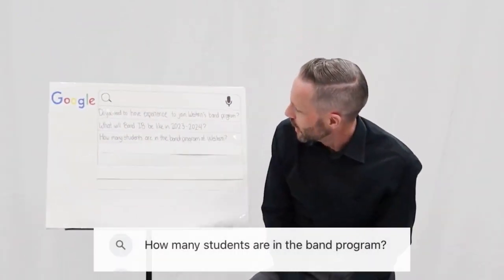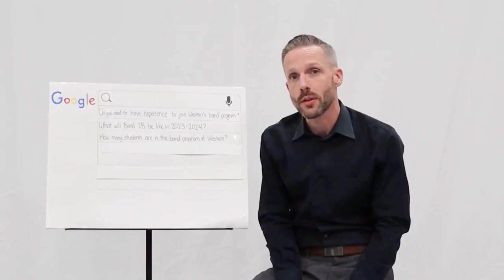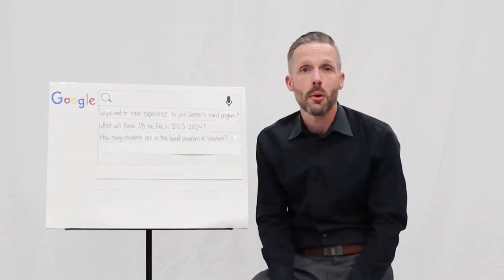How many students are in the band program at Western? Depending on the year, we fluctuate anywhere between 275 and 300 students across the three grades. What's really important to know is that our large performing ensembles are all grade based. We have grade 10 concert band, grade 11 symphonic band, and grade 12 wind ensemble, and students move together for all three years of their time here.